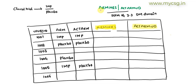The two new variables are ARMNRS and ACTARMUD. ARMNRS is used to capture the reason why ARM or actual ARM, or at least one of them, is null. ACTARMUD is used for describing the unplanned value in the actual ARM variable — that is, the description of an unplanned actual ARM.